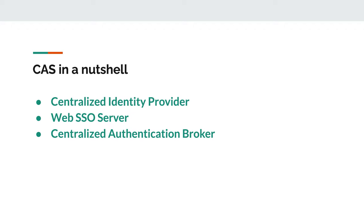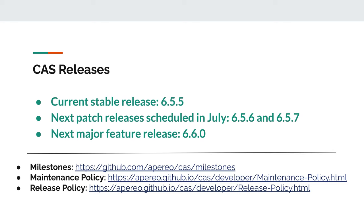CAS Server as a platform also provides flexible and pluggable extension facilities, so custom authentication modules could be easily plugged into it. As for the releases, the current stable release of CAS is 6.5.5, with a couple more patch releases in the 6.5 line scheduled in July of 2022.